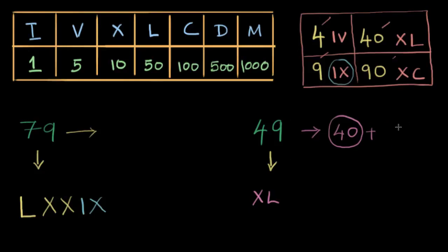Now let's give a different color for 9. Now how do we, we don't, we can forget about this 40. That's what is XL over here. What is 9? I already know how to write 9. That's IX. So I write IX over here. So XLIX will be 49.